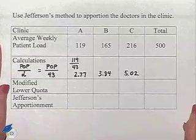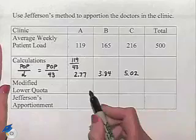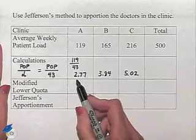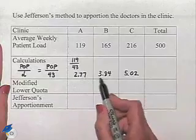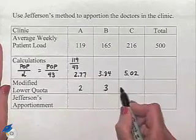Now we're going to get what's called the modified lower quota. That means we're now going to truncate these to end up with only the whole number portion of the value that we came up with through our calculations. We're going to have a 2, a 3, and a 5.